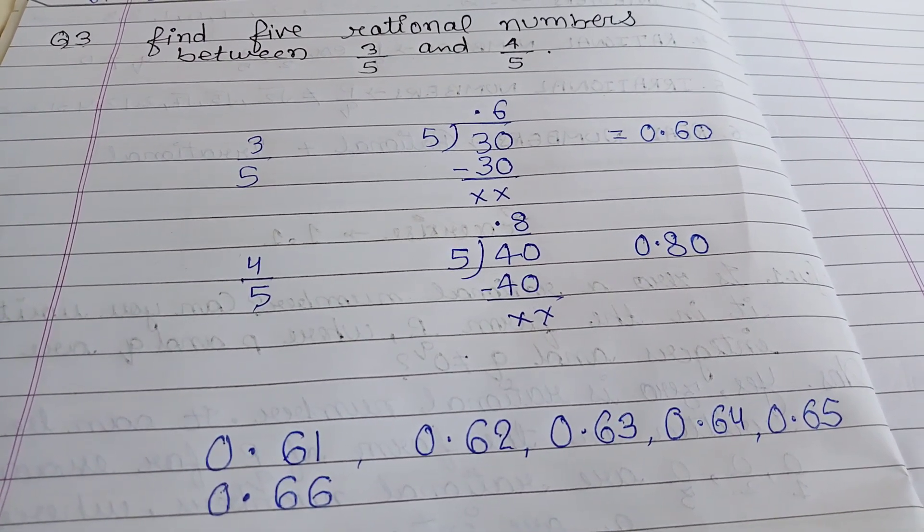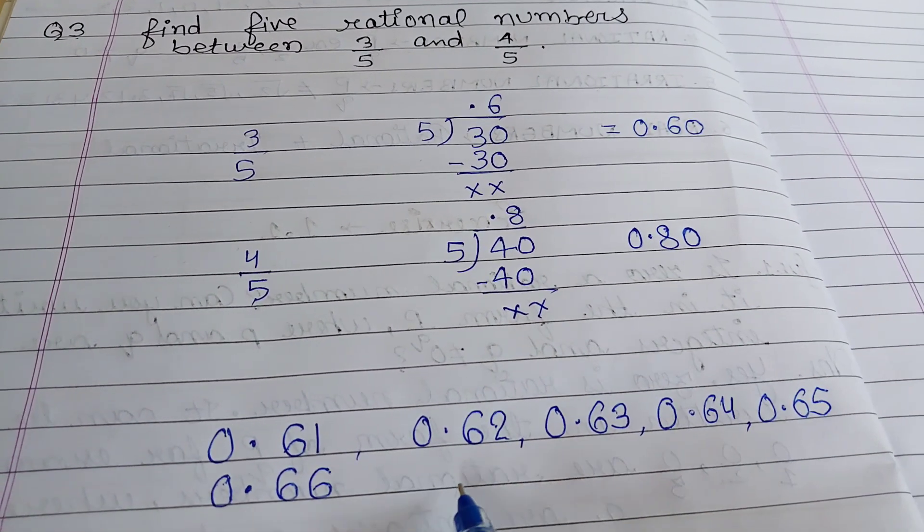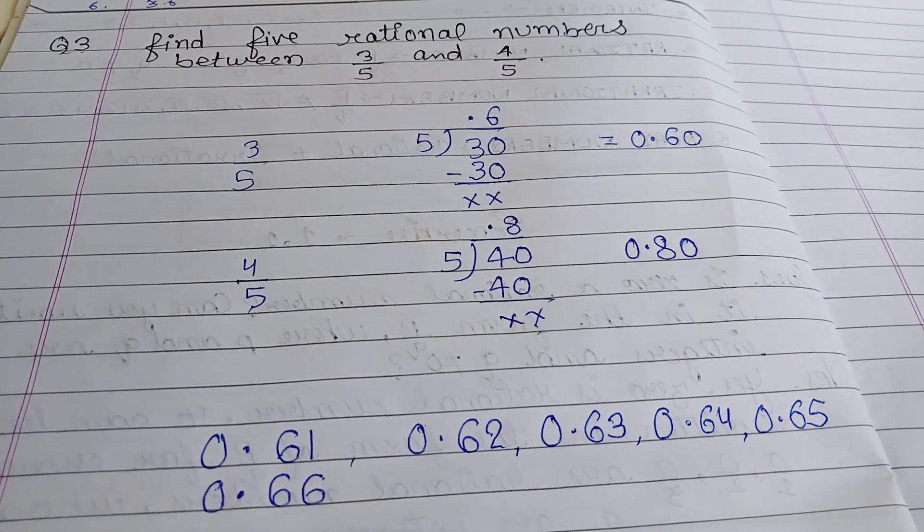If you have to find 10 rational numbers, you can continue 0.67, 0.68, 0.69. Now write question number 3 in your CW.